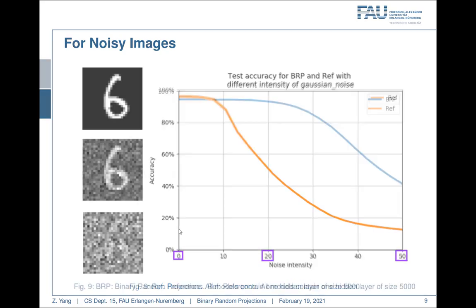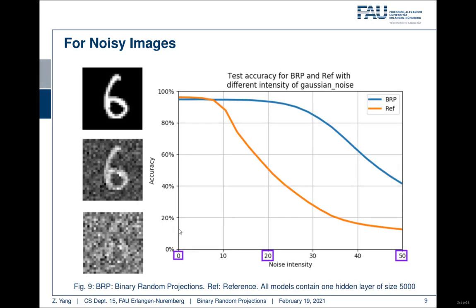But if we now look at our binary random projection models, at zero noise intensity, it is slightly worse than a normal network. But if we look at the noise intensity 20, it still has around 93% accuracy, where a normal network has only around 50% accuracy. And even at 50 noise intensity, our random projection network can have above 40% accuracy, where a normal network is just randomly guessing.